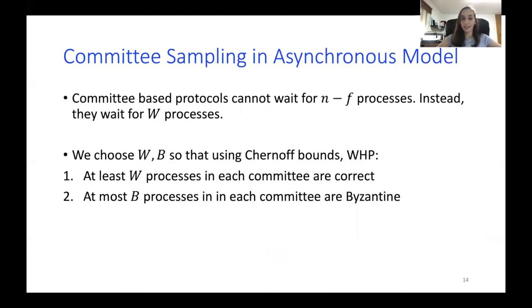So what we do in the work, we define two parameters, w and b, so that using Chernoff bounds, we can prove with high probability that in each committee sample, at least w processes are correct and at most b processes are Byzantine. Then instead of waiting for n minus f, we can only wait for w. And with high probability, this will be okay.